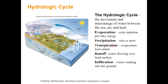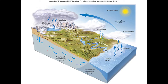You also have transpiration, which is evaporation from plants - plants take up water at the roots, move it up into their leaves, and water escapes through those leaves. Runoff is water flowing over the land surface, getting into rivers and staying on the surface. Infiltration is where water soaks into the ground, which relates to groundwater - the topic of the next chapter. So: evaporation condenses in clouds, moves over land, precipitates, then either runs off into streams or infiltrates into the ground.